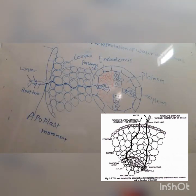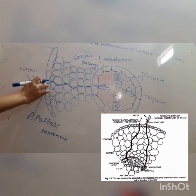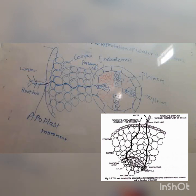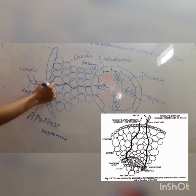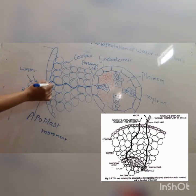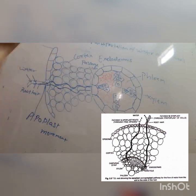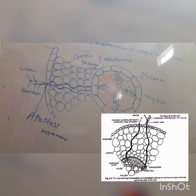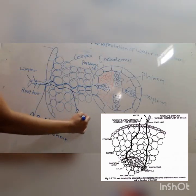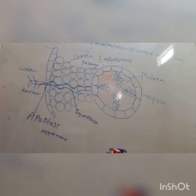Another movement is symplastic movement. In symplastic type of movement, water moves inside the cortex by crossing the cytoplasm of the cells. Water enters from the root, crosses the cytoplasm of the first cell, then moves towards another cell, then another cell, continuing through each cell's cytoplasm towards the endodermis. This type of movement is called symplastic movement.